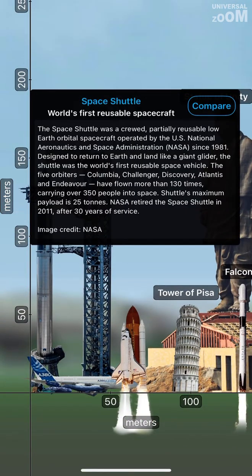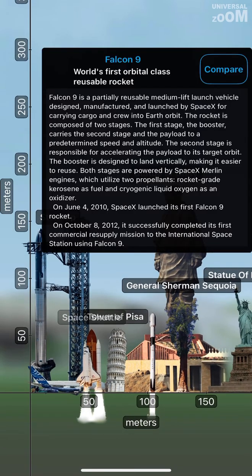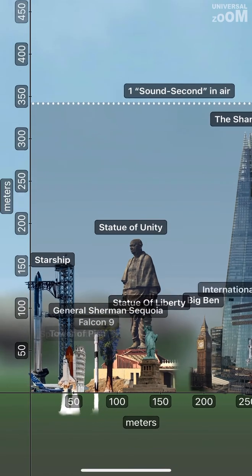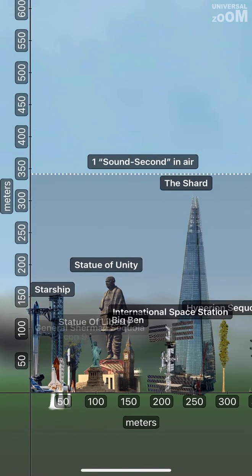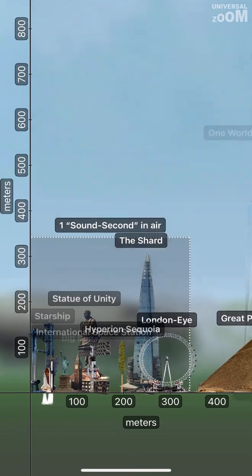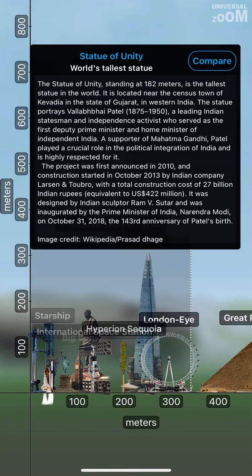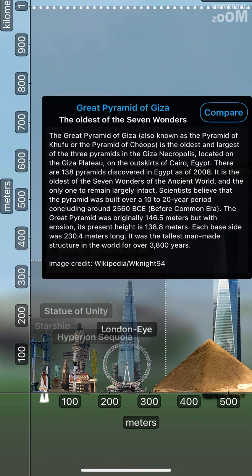Space Shuttle, Tower of Pisa. Falcon 9, General Sherman Sequoia, World's Largest Tree By Volume. Statue of Liberty, Big Ben. International Space Station, Hyperion Sequoia, London Eye. Starship, Statue of Unity, Great Pyramid of Giza.